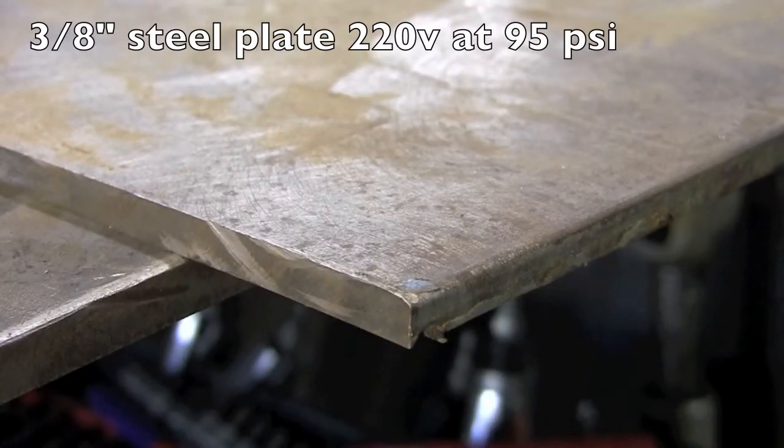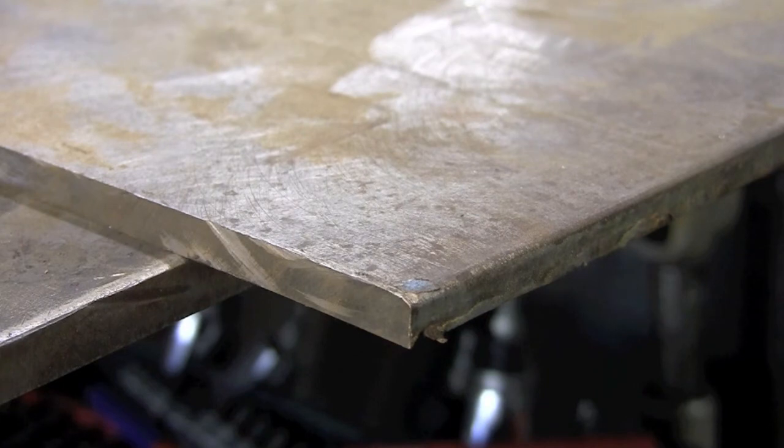Now I've wired the machine for 220. I've turned the air pressure up to 95 psi. And we're going to cut some 3/8 cold rolled steel.